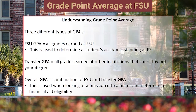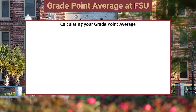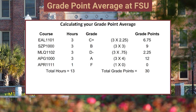Now let's understand calculating your grade point average. You can see here there's a sample schedule that consists of five courses, which totals out to be 13 credit hours for this term. We can see the various grades assigned with each course, and to get to a total of grade points, we take the hours multiplied by the numerical equivalent associated with the grade, which then reflects our grade points.